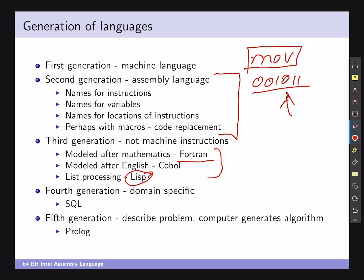The fourth and fifth generational changes are somewhat more debatable. The fourth generation is generally deemed for domain-specific languages — the most tangible example being SQL. Then we have the fifth generation, which in my opinion has been a bit of a failure: the premise being that you describe the problem and the computer generates the algorithm. The most prevalent example is logic programming, like Prolog. You'll go through more Prolog programming in COS333. But logic programming is very hard because describing the problem in sufficient detail such that the system can generate the algorithm is almost harder than writing the algorithm yourself.